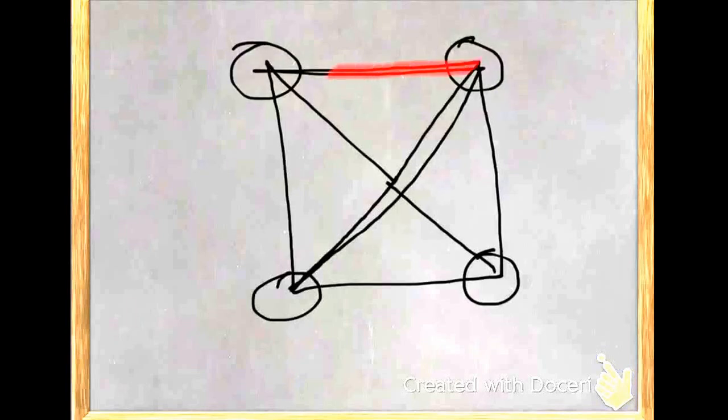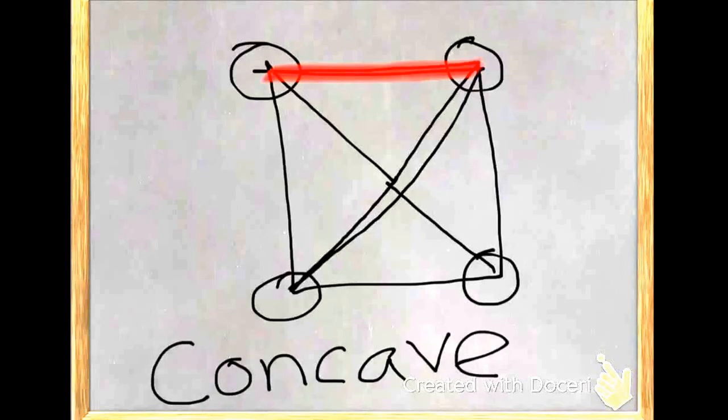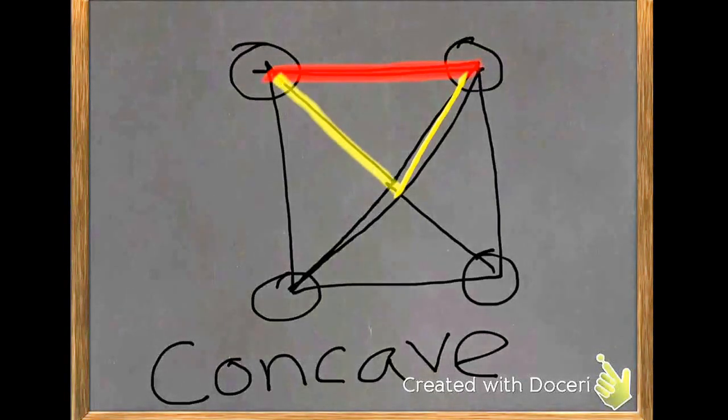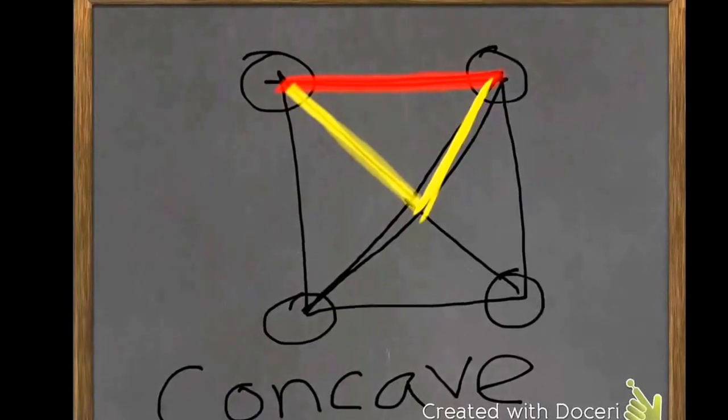So we would call this, since it's on the outside of the polygon and we're connecting diagonals, we would call this a concave polygon. And basically what that means is that the shape caves into the inside and so that the diagonal goes across the outside. We call this a concave polygon.